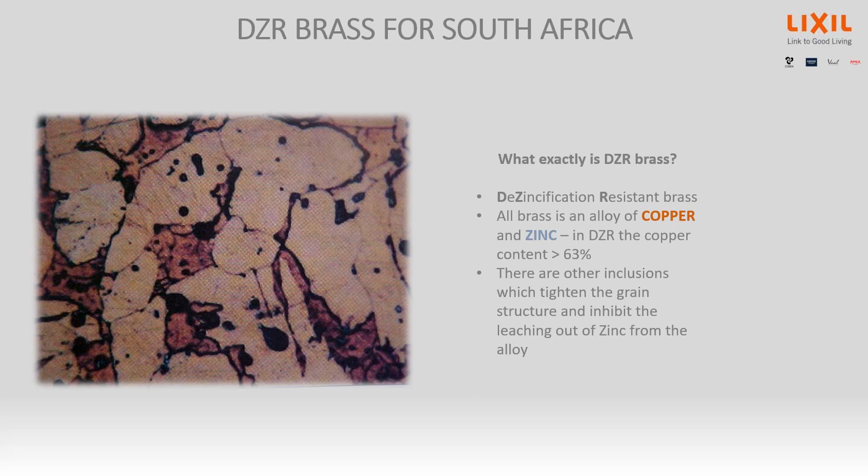These products are made of DZR brass — an alloy of copper and zinc. In normal brass, zinc gets leached out by water's suspended solids, the zinc combines with salts, corrodes out, and leaves brittle, porous copper behind. DZR brass has greater than 63% copper content plus additives including tin, tungsten, and others which tighten the grain structure and prevent dezincification. It's a harder metal, melts at a higher temperature, and eats tools quickly, but it's the required standard and it really works.